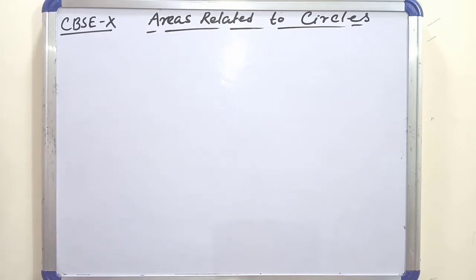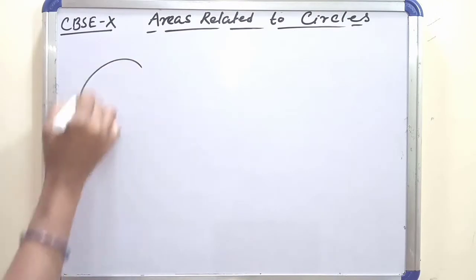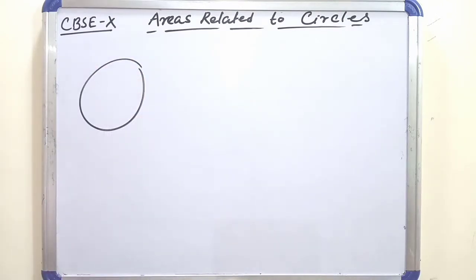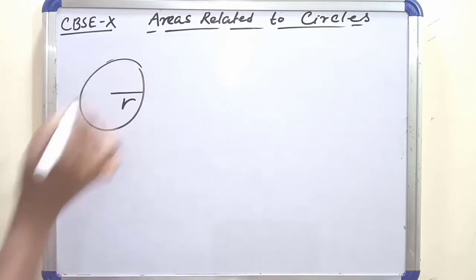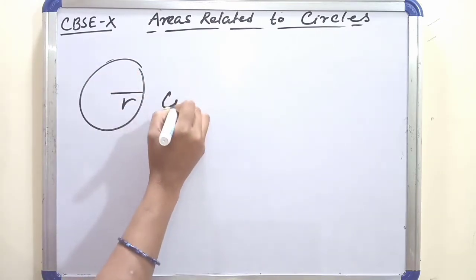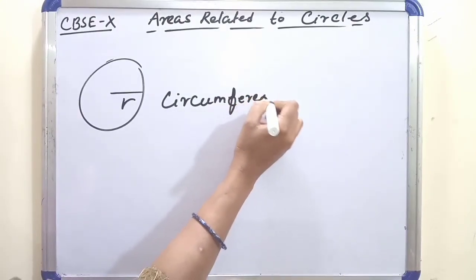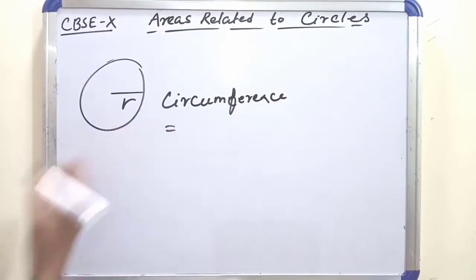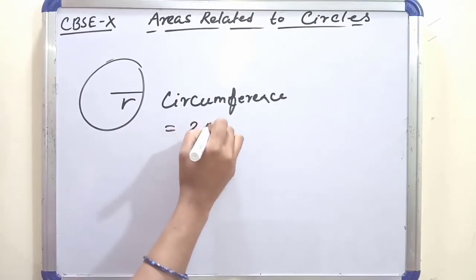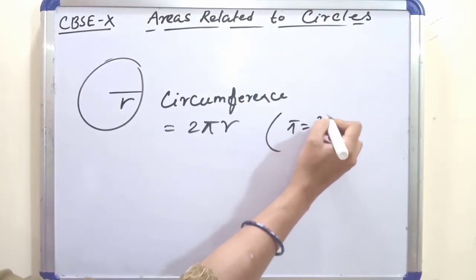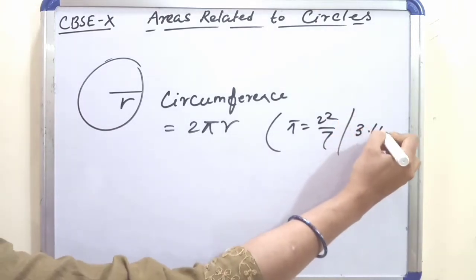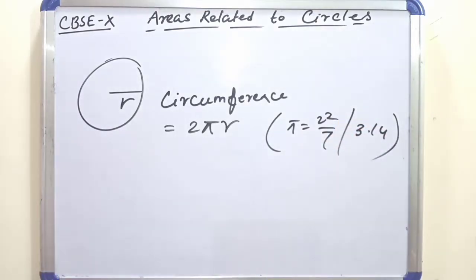Suppose this is a circle with radius r. The circumference or perimeter of this circle — circumference means the boundary. The formula for circumference is 2πr, where r is the radius and π is the fixed value 22/7 or 3.14.